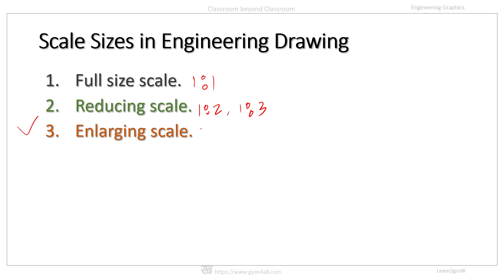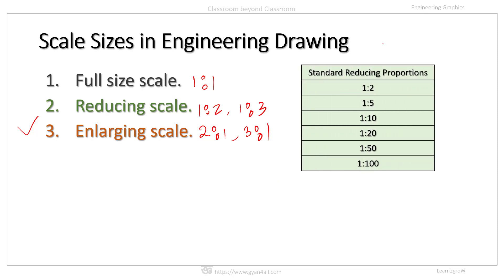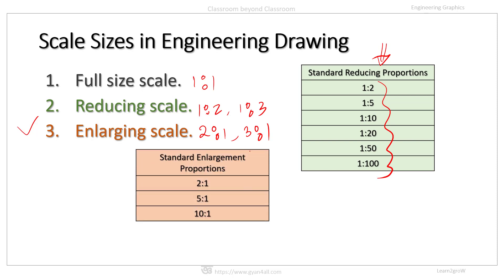Enlarging scales are like 2:1, 3:1, and so on. The scale in which the actual measurements of the object are increased to some proportion is known as enlarging scale — for example, small machine parts like watches. There are standard reducing proportions in engineering drawing: 1:2, 1:5, 1:10, 1:20, 1:50, and 1:100. Similarly, for enlarging there are standard scales: 2:1, 5:1, and 10:1.